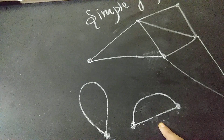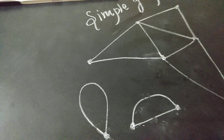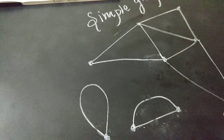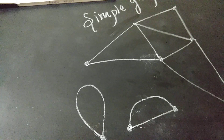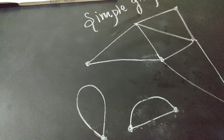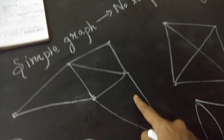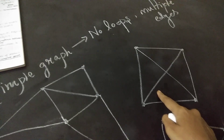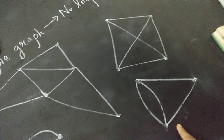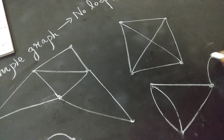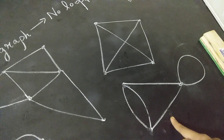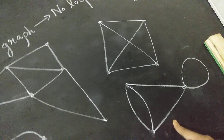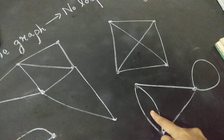So in a simple graph you should not see a loop and multiple edges — both should not be allowed in a simple graph. This is an example of a simple graph, and this is also an example of a simple graph. Look at this — this is not an example of a simple graph. Because it consists of a loop and multiple edges.